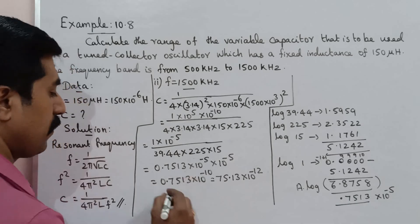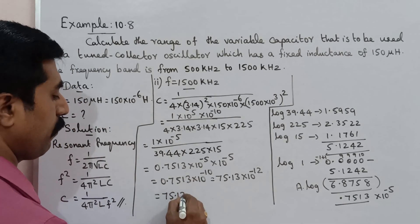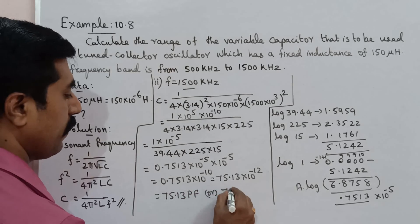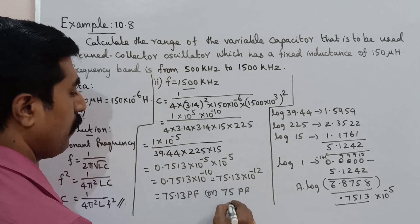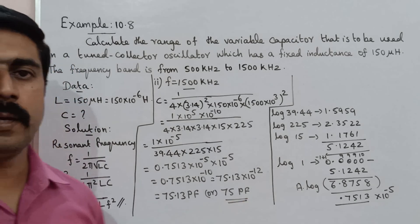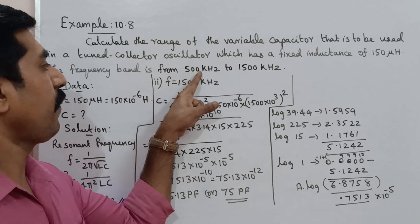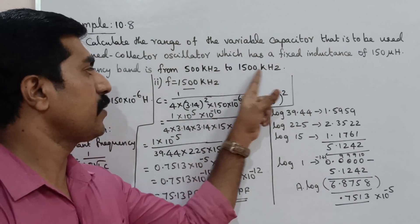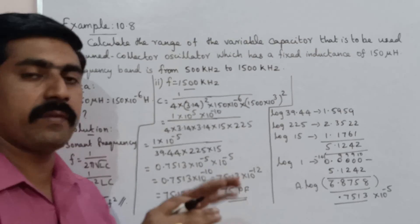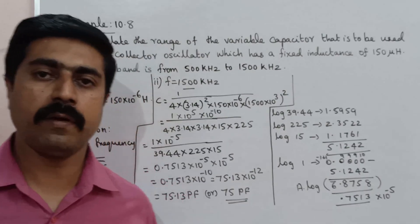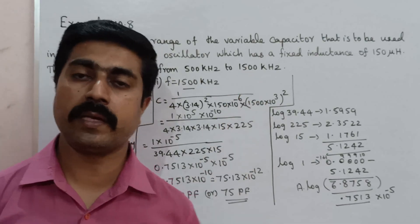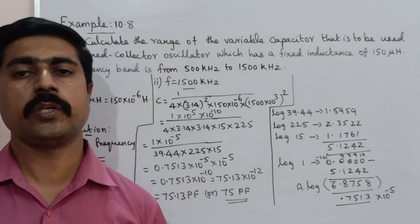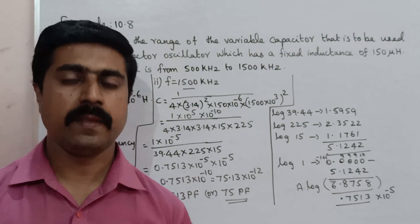Antilog gives 75.13 picofarad, approximately 75 picofarad. So for the frequency of 500 kHz, capacitance is 673 pF, and for 1500 kHz the capacitance is equal to 75 picofarad. So the range of the variable capacitor is from 75 pF to 673 pF. Please share with your friends. All the best. Thank you.